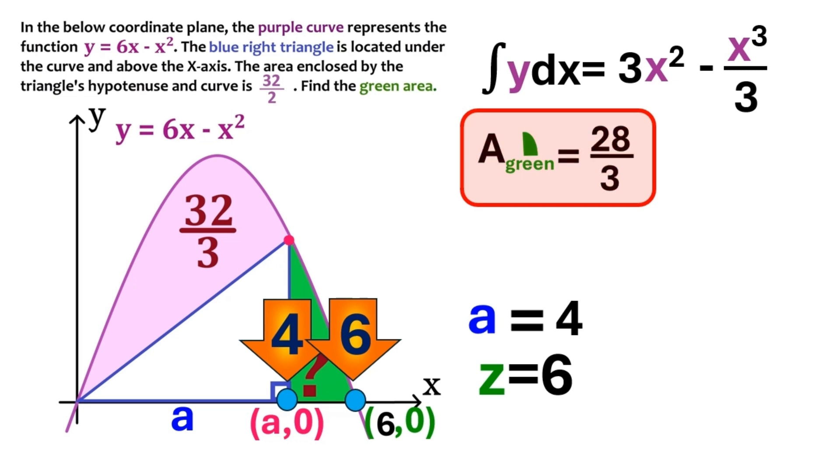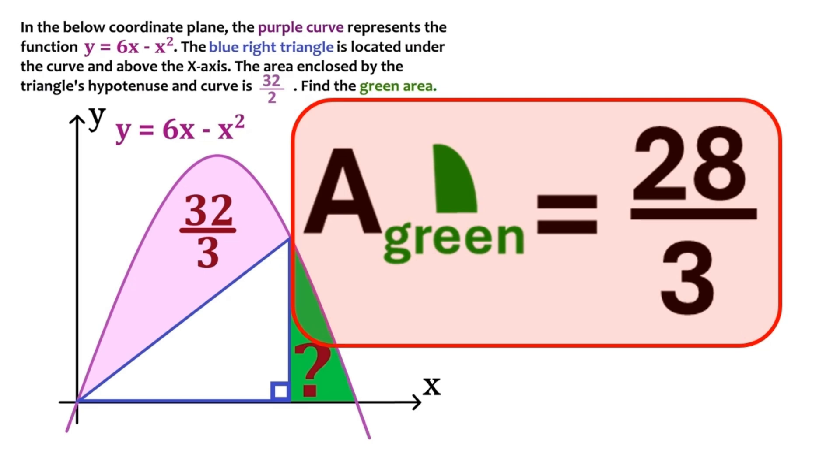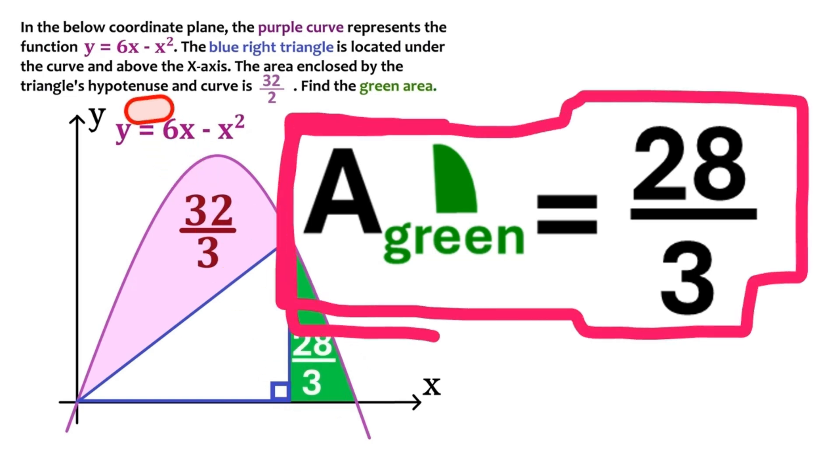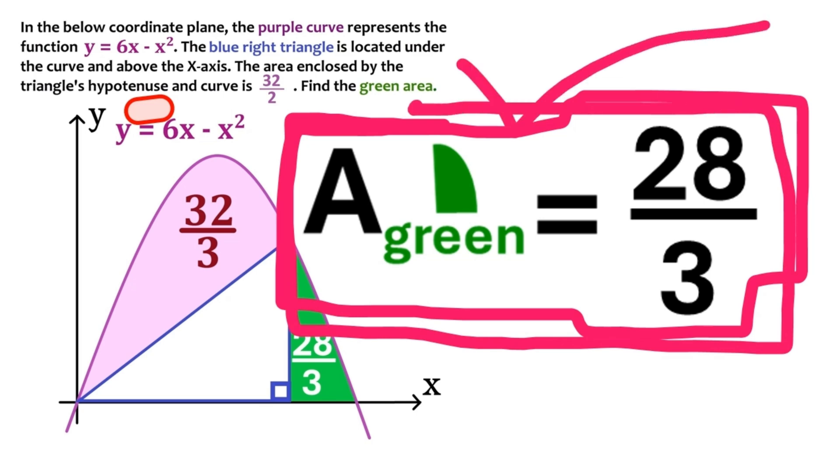So that's it people. We've found the area of the green region. And it's 28 over 3. This is the first time I use integral in one of my tutorial videos. And I really want to know what you think. So feel free to tell in the comments.